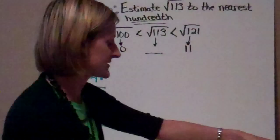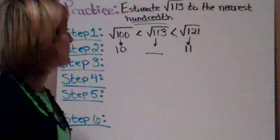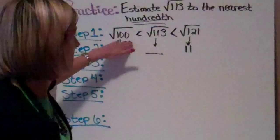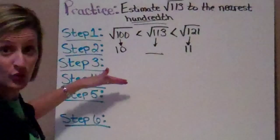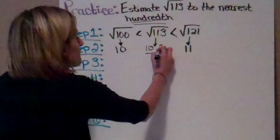Let's do one last practice problem. We are going to estimate the square root of 113 to the nearest hundredth — again, 2 decimal places. The first thing: find the 2 perfect squares that it falls between, and that is 100 and 121. Second step, find those square roots, which is 10 and 11. So that means the square root of 113 is going to be 10 point something.